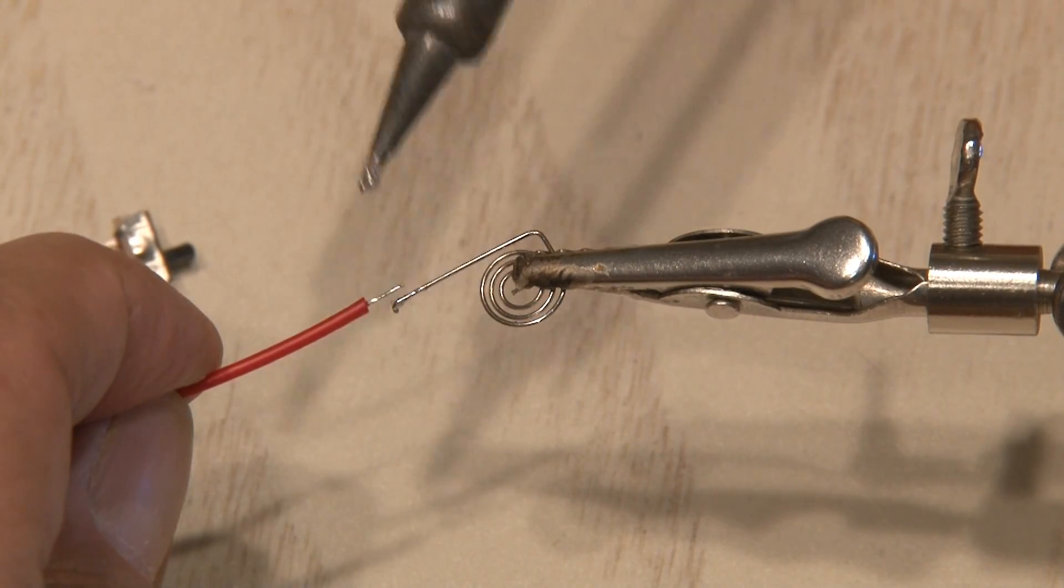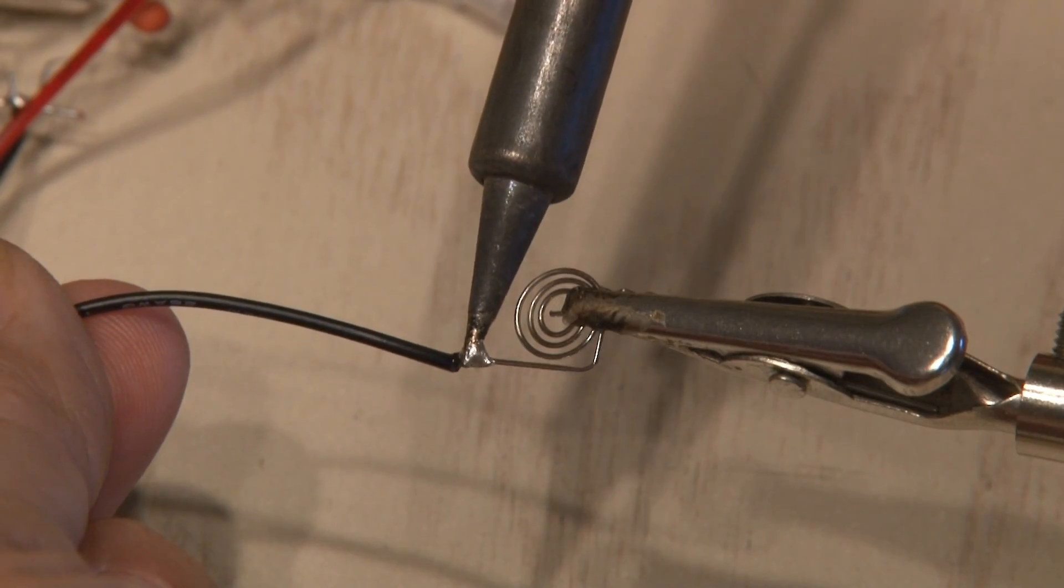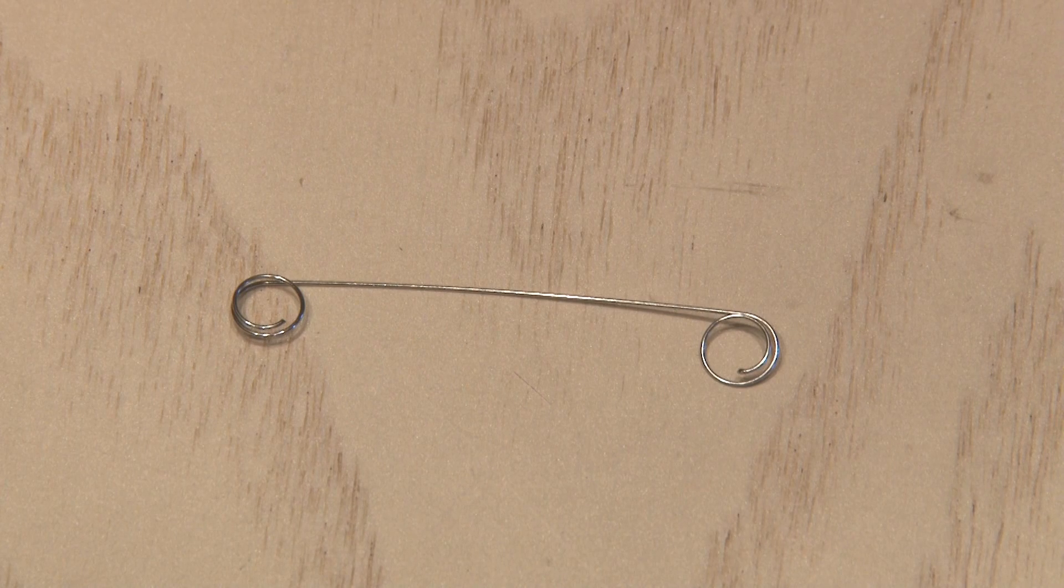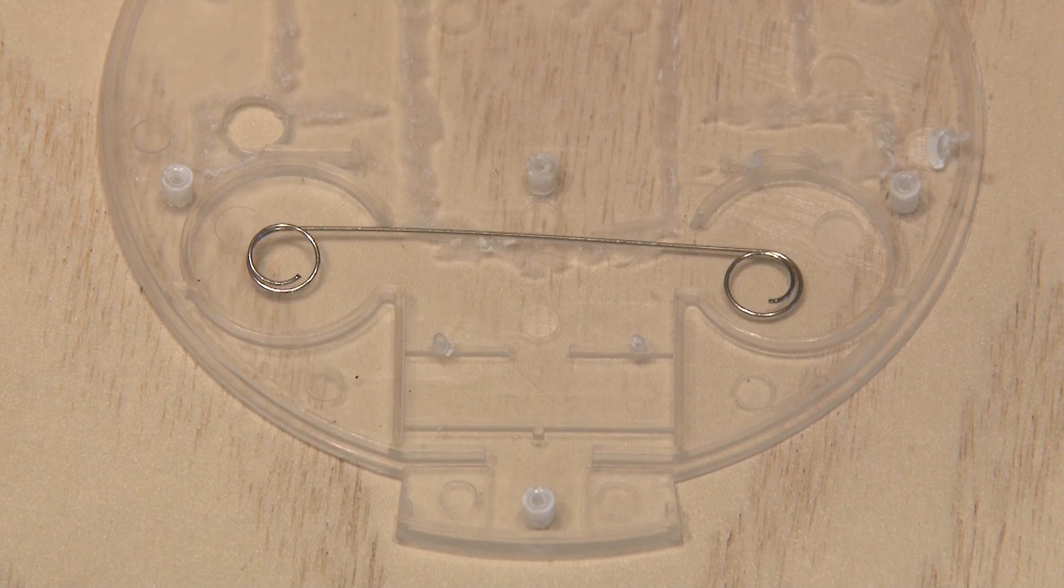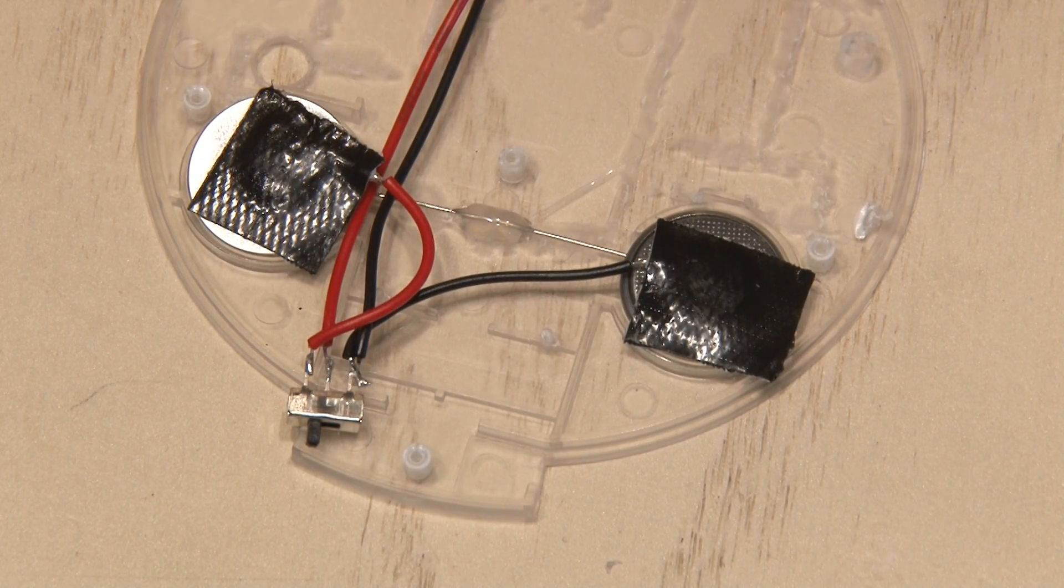Remember those two little spring contacts that we unsoldered? It's time to put those to work for our power wire and ground wire that'll be going to our batteries. That longer battery contact wire comes back into play as well, as it'll be riding underneath our batteries. Then the batteries are added, and some black tape is used to hold the other contacts in place.